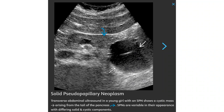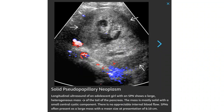This is the ultrasound of the abdomen in a patient with SPN, showing a cystic mass arising from the tail of the pancreas. They are variable in their appearance with differing solid and cystic components. The ultrasound of an adolescent girl with solid pseudopapillary neoplasm shows a large heterogeneous mass of the tail of the pancreas; the mass is mostly solid with a small central cystic component.